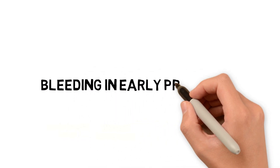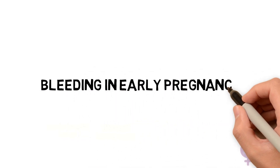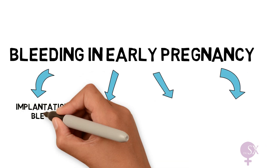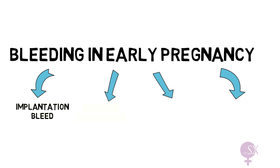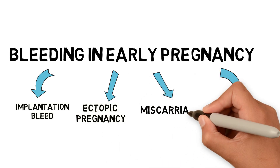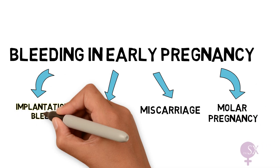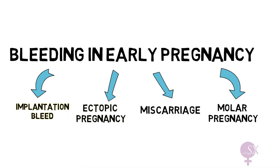We shall be continuing the discussion of bleeding in early pregnancy. Just as a recap, we said that there are four causes of bleeding: implantation bleed, ectopic pregnancy, miscarriage, and molar pregnancy. In the previous video, I've already discussed implantation bleed and ectopic pregnancy. Now I'm going to start off by discussing miscarriage.